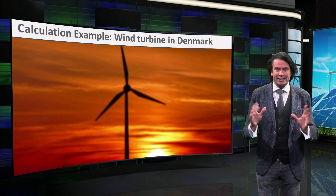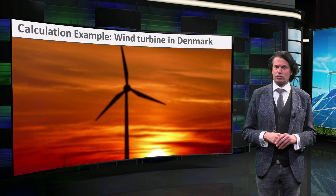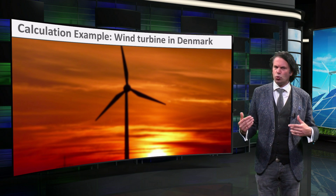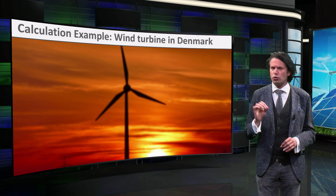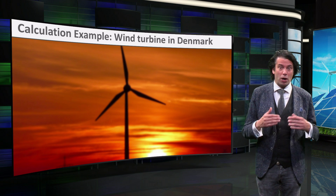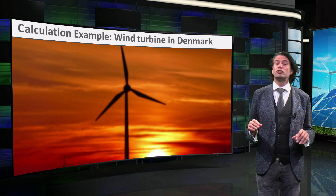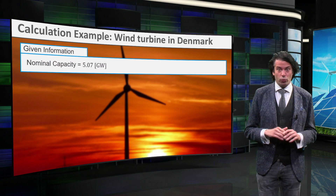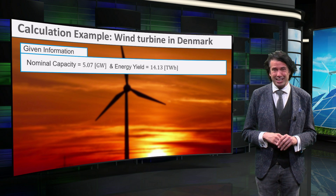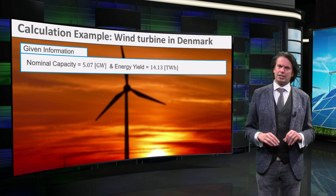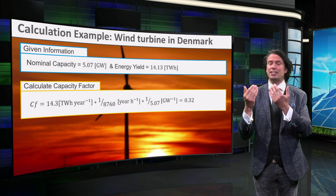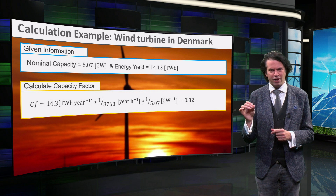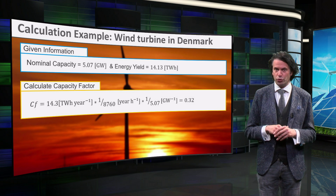In order to estimate the capacity factor of wind turbines, we will take a look at the country of Denmark. Denmark is a worldwide leader when it comes to wind power, producing about 42% of the electricity demand with wind power alone. In 2015 they had a total nominal capacity of 5 GW, with which they produced around 14.13 TWh. The capacity factor is calculated by dividing the energy yield by the nominal capacity multiplied by the time. This results in a capacity factor of 0.32, or 32%.